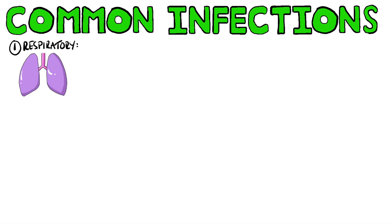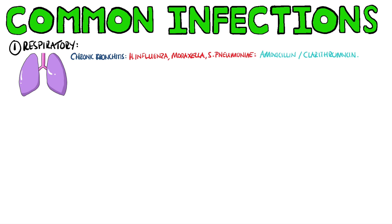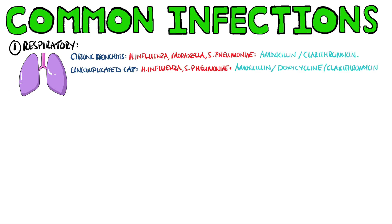Moving on to common infections by body system — for respiratory infections, exacerbations of chronic bronchitis are often caused by H. influenza, Moraxella, and Strep pneumo, for which we could use amoxicillin or clarithromycin. Uncomplicated community-acquired pneumonia, often caused by Strep pneumo or H. influenza, will usually be treated with amoxicillin, but doxycycline or clarithromycin are recommended in penicillin-allergic patients.